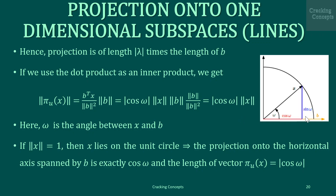If the norm of x is 1 then x lies on a unit circle, which implies that the projection onto the horizontal axis spanned by b is exactly cos(omega) and the length of the vector pi_U(x) is the absolute value of cos(omega). Here we see the projection of a two-dimensional vector x, where the norm of x is 1, onto a one-dimensional subspace spanned by b.